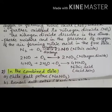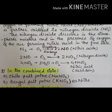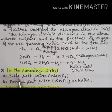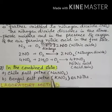Nitric acid also occurs in the combined state in the form of minerals. First is sodium nitrate, also called Chile saltpeter, and second is potassium nitrate, called Bengal saltpeter. Both these two salts are also used in the laboratory preparation of nitric acid.